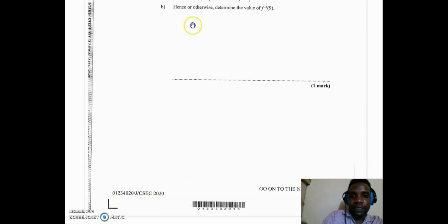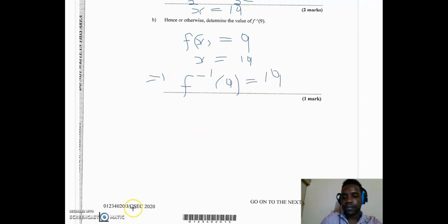The beauty about this is that we would have done it already in the previous question. So I would have f of x equal to 9. Since we solved this already, we got x to be equal to 19. So this is going to imply now that f inverse of 9 is actually equal to 19.